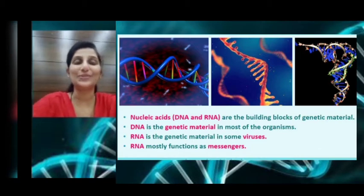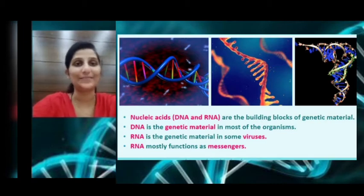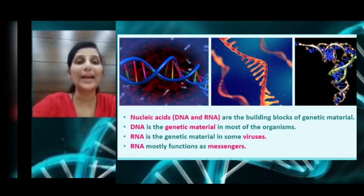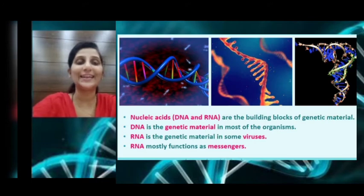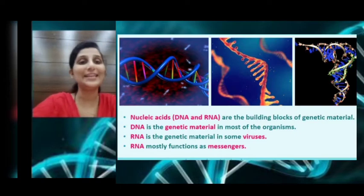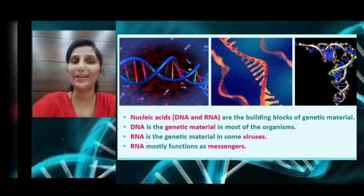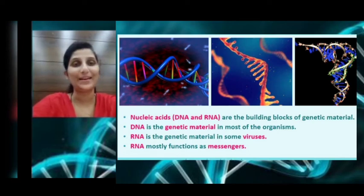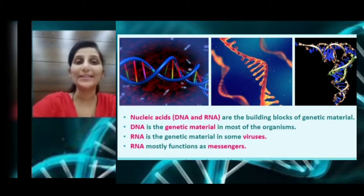After many years of Mendel's discovery on factors, the nature of the genetic material was investigated and it was realized that there are two types of genetic materials — the nucleic acids. The nucleic acids are DNA and RNA. DNA stands for deoxyribonucleic acid and RNA stands for ribonucleic acid. DNA is considered to be the genetic material in most organisms.